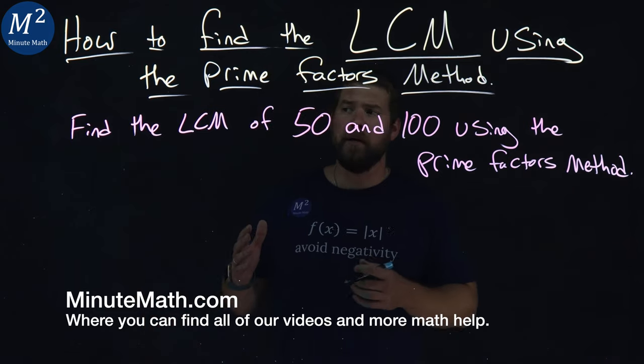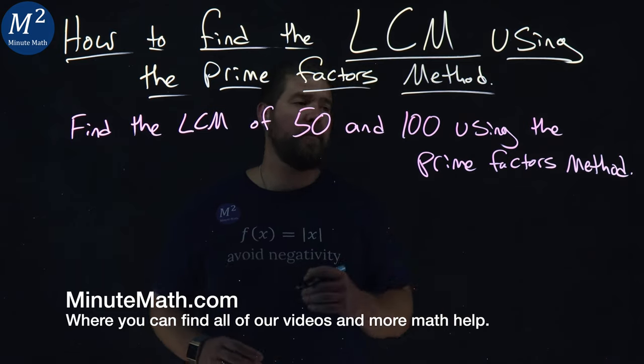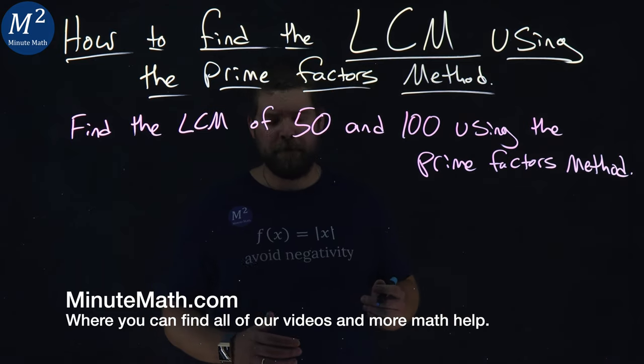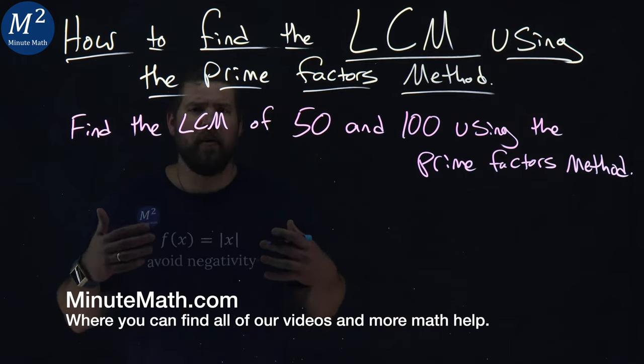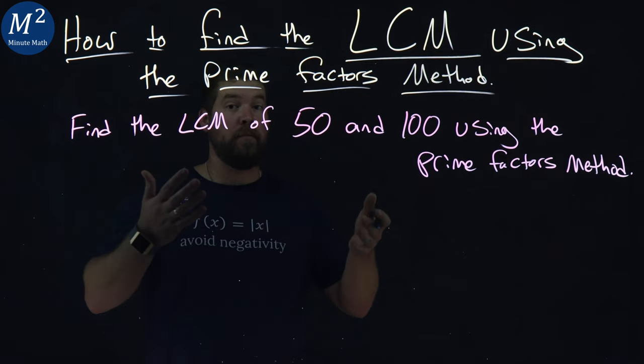We're given this problem here. We want to find the LCM of 50 and 100 using the Prime Factors method. First, I have to identify what the prime factors of each of these numbers are.